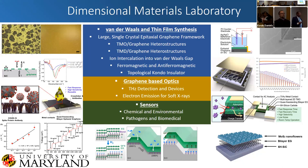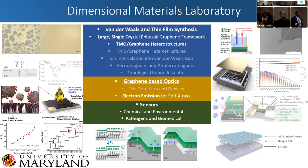We do terahertz detection in devices, electron emission for soft x-rays, which we will talk about today. In terms of sensing, all the atoms are exposed to the environment, so it's really great for chemical and environmental sensing, pathogens, and biomedical applications. In the interest of time, we're really only going to focus on graphene, TMO graphene heterostructures, electron emission for soft x-rays, and our pathogen and biomedical sensors.